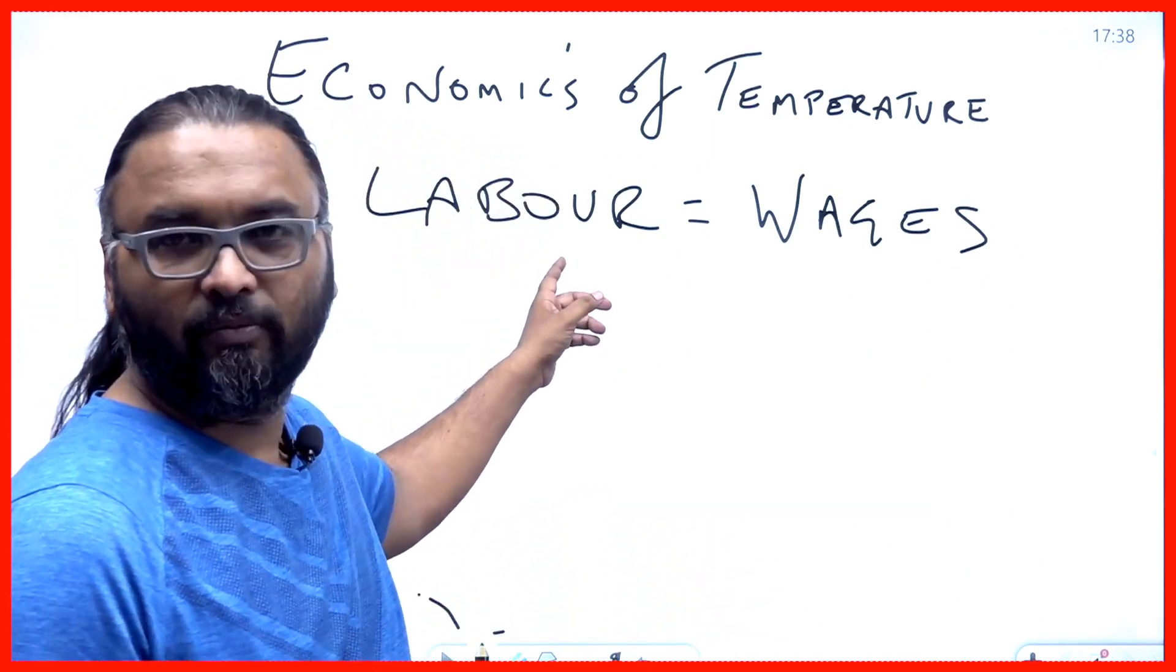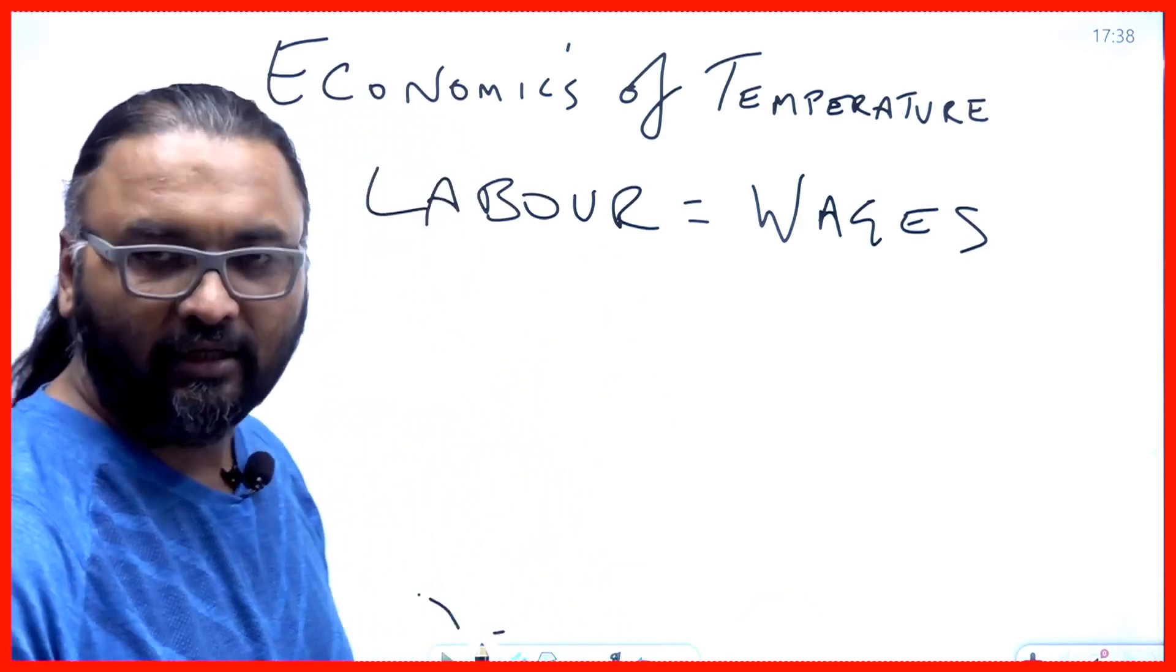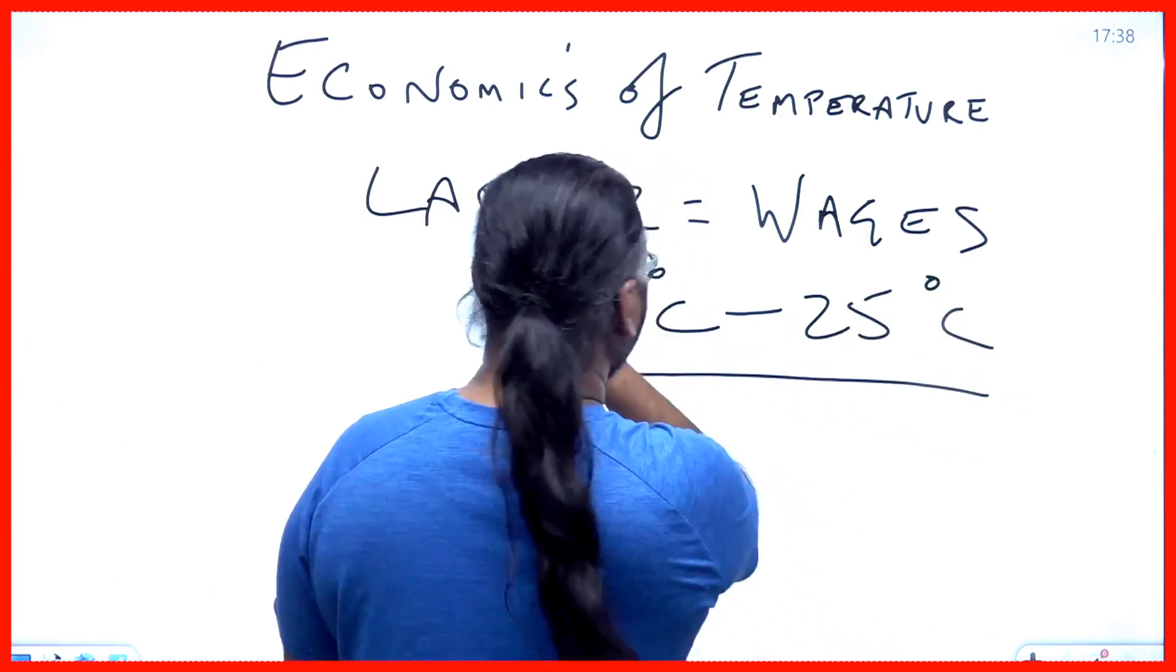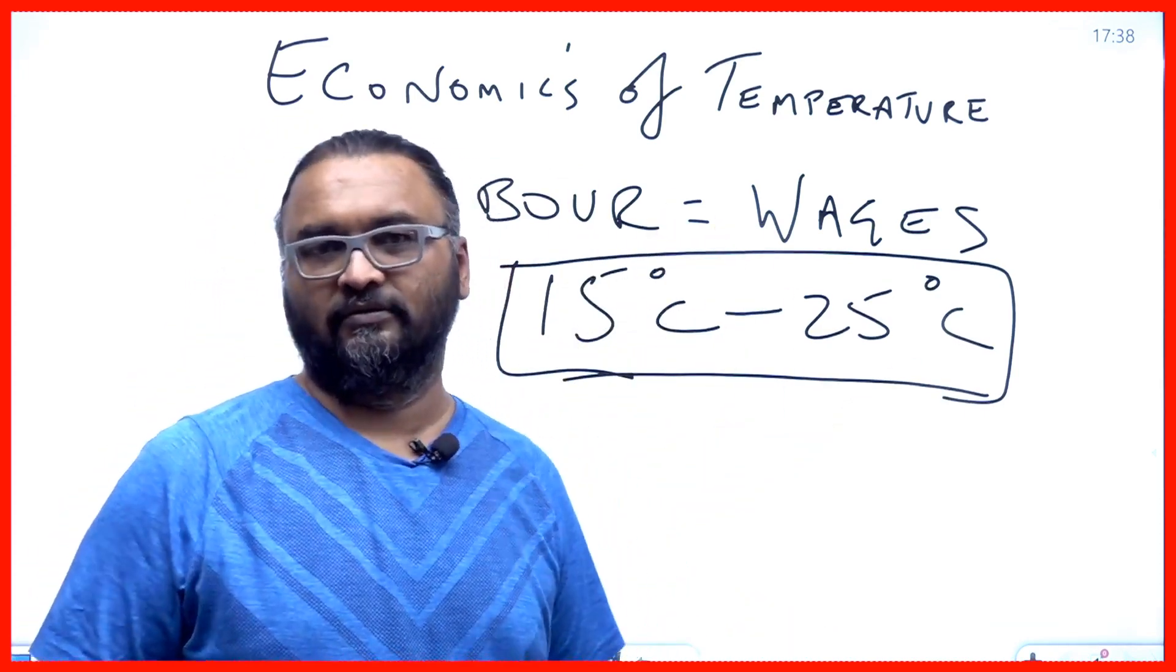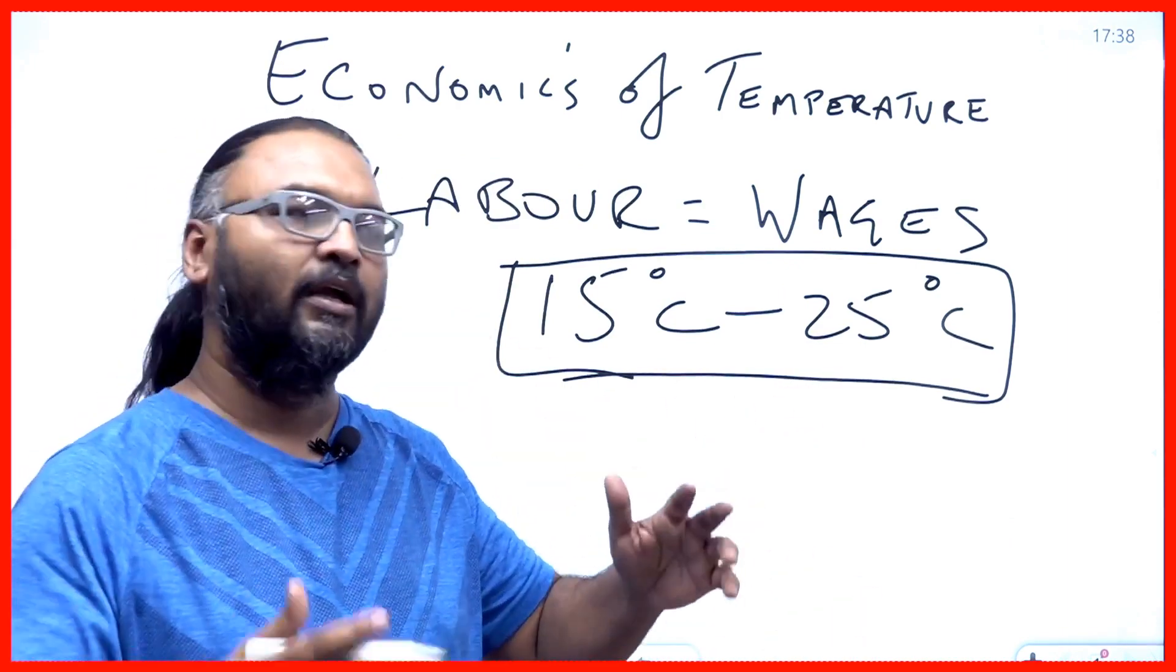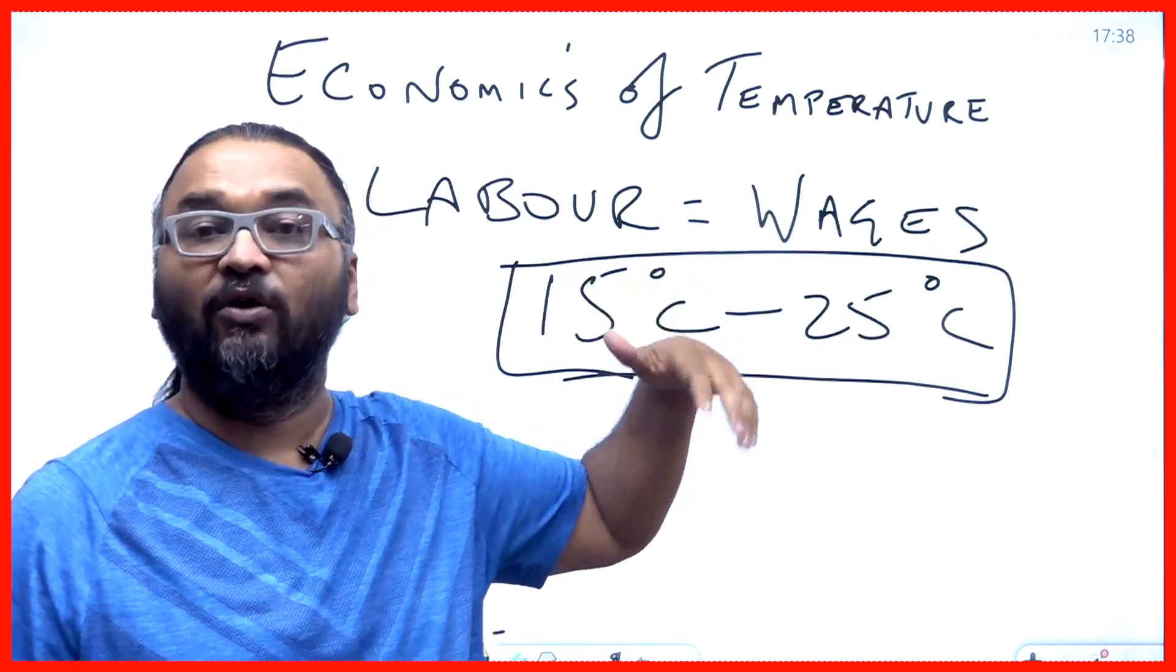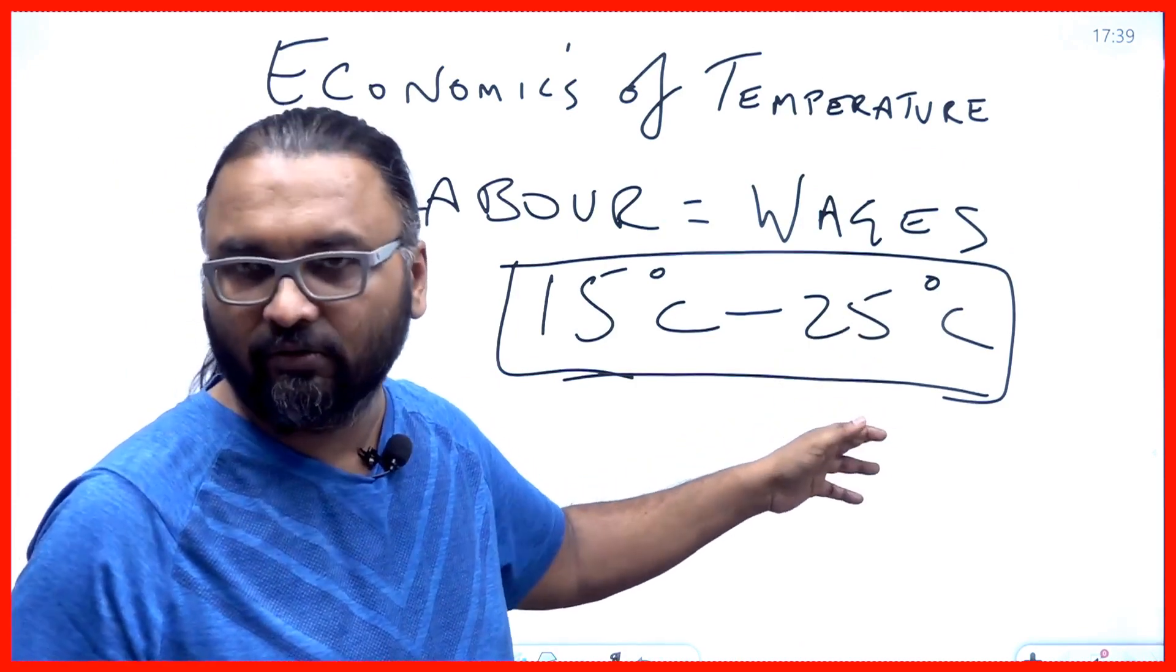At what point is labor most productive? It is at the point of 15 degrees centigrade to 25 degrees centigrade, or what we know as temperate weather, that labor is most productive. That is what research has evidenced over a long period of time. Labor can be productive even at 30 degrees centigrade, at 40 degrees centigrade, at 45 degrees centigrade, but labor will not be as productive as it would be between 15 to 25 degrees centigrade.